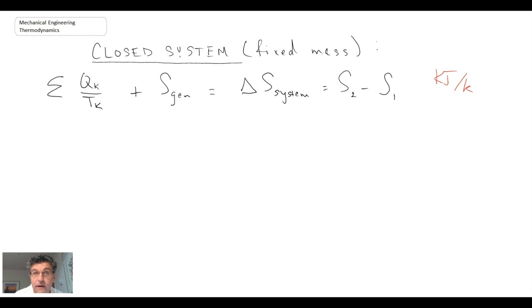And looking at an open system, so the control volume approach where you would have mass crossing the boundary. And I'm going to express this in rate form. And so that means that we will have mass flow rates and heat transfer rates. So that will be in kilojoules per second, and mass flow rates are kilograms per second. But the form of the entropy generation equation, or the entropy balance I should say.